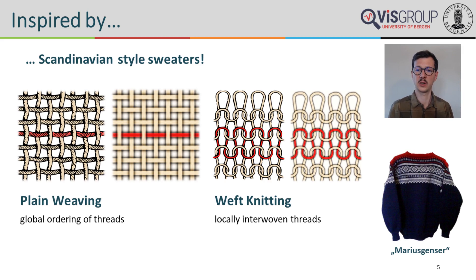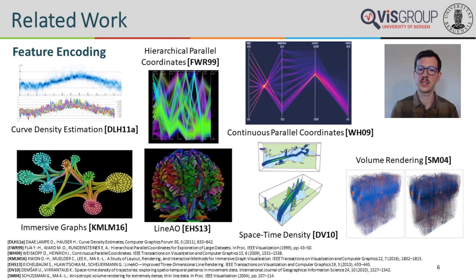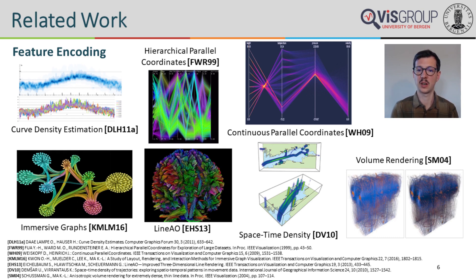We therefore started our research by exploring related and inspiring work that is already out there. First, I want to start with visualizations of features derived from line data and how they can be visually encoded. One possibility to reduce clutter is to visualize a density estimation instead of individual lines or curves. Unfortunately, density representations in general are not well suited when analyzing individual lines, especially in sparse regions.